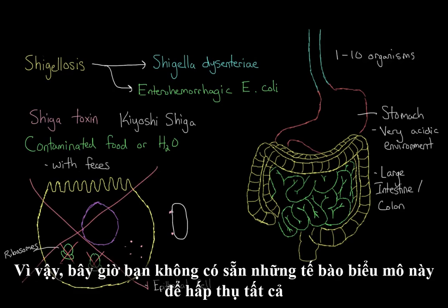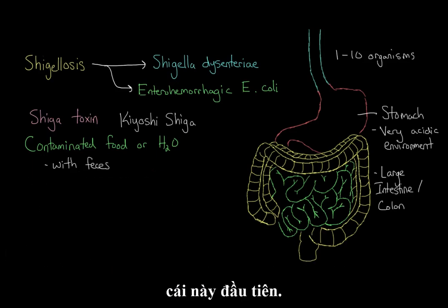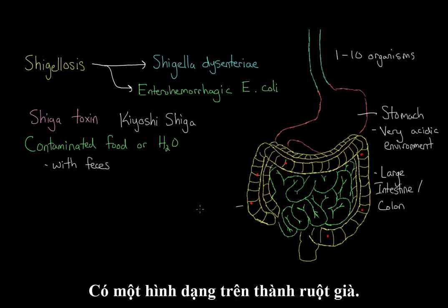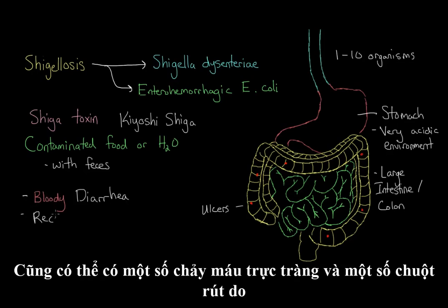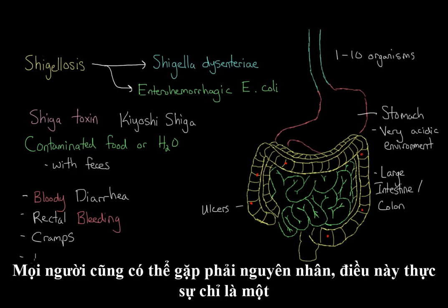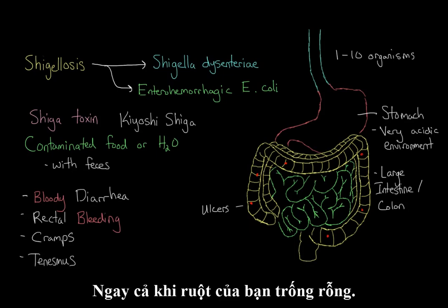Because you don't have any ribosomes producing proteins, this epithelial cell will then subsequently die off. So now you don't have these epithelial cells available to absorb all that water. The symptoms associated with this include ulcers that form on the wall of the large intestine, bloody diarrhea, rectal bleeding, and cramps due to the inability to absorb water. People may also experience tenesmus, which is a consistent sensation that you need to evacuate your bowels even when your bowels are empty.